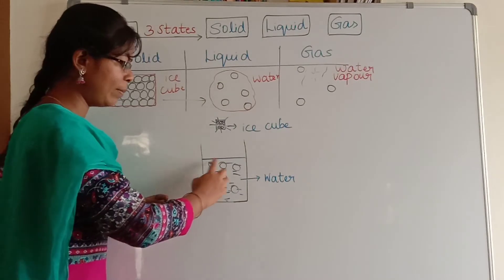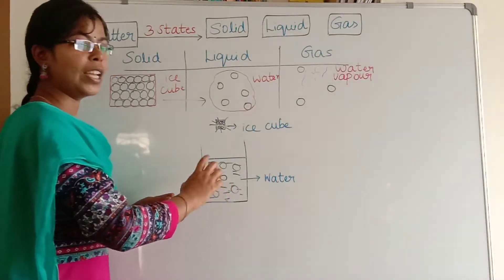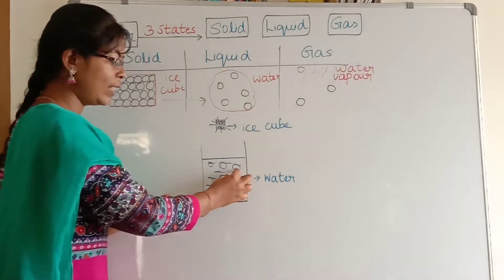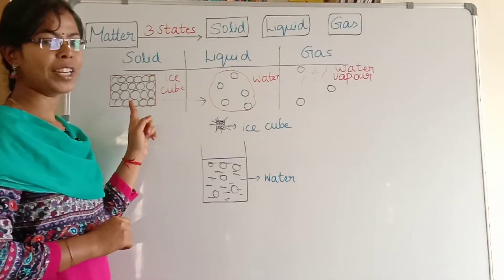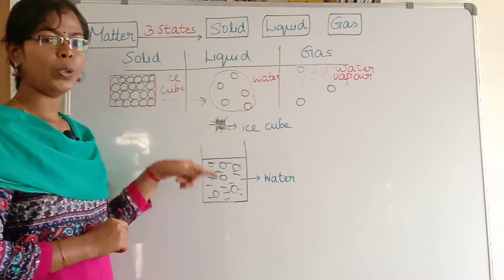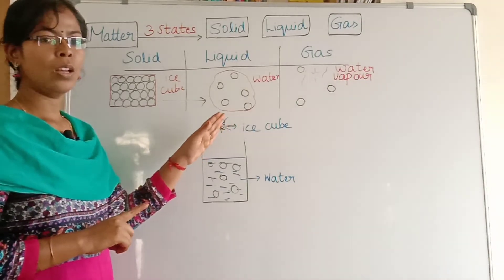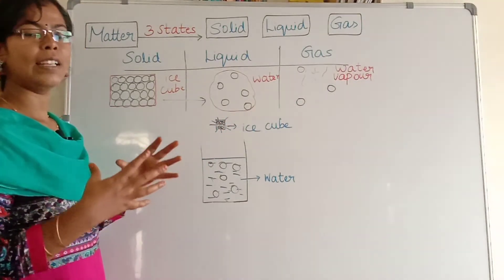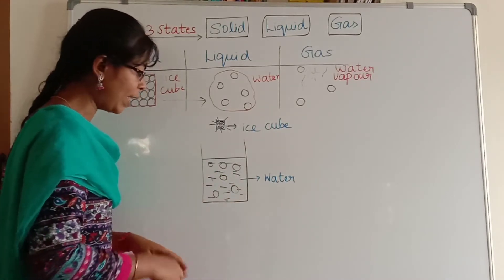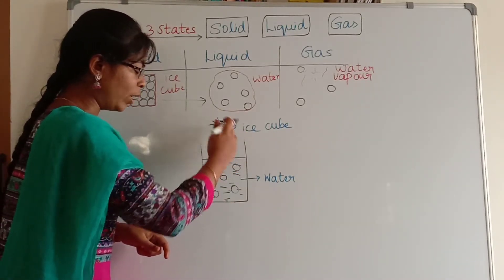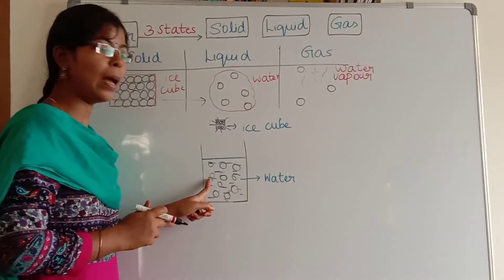Now I am taking water in a tumbler. The arrangement of particles — particles are nothing but atoms — is irregularly and randomly arranged, and you can see the space between them. Now I am going to put ice cubes into this water. In ice cubes, the arrangement of atoms is tightly packed. When you put this ice cube into water, the ice cube will get melted and it forms water. The tightly packed particles will collapse and will occupy the spaces between the particles, so the ice cube particles will occupy the space between the water particles.